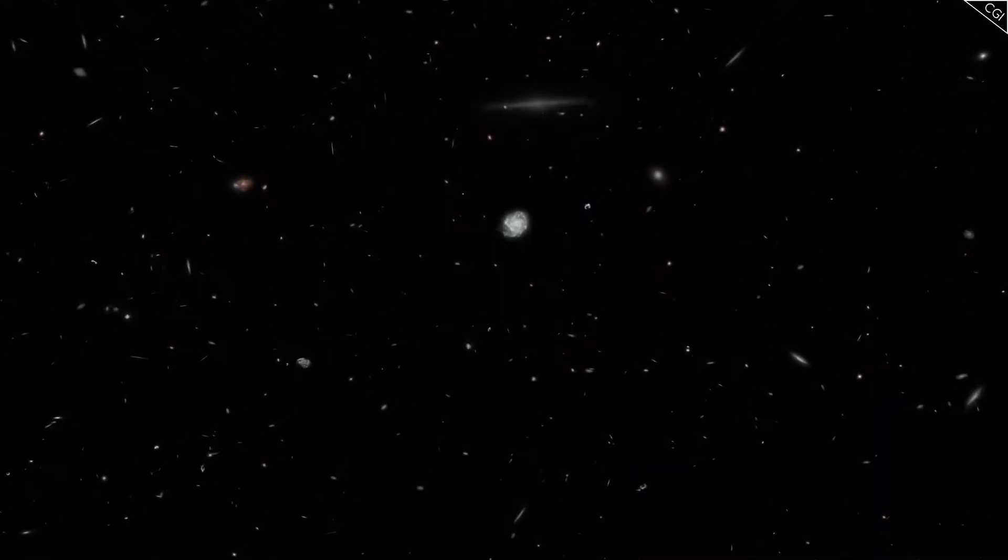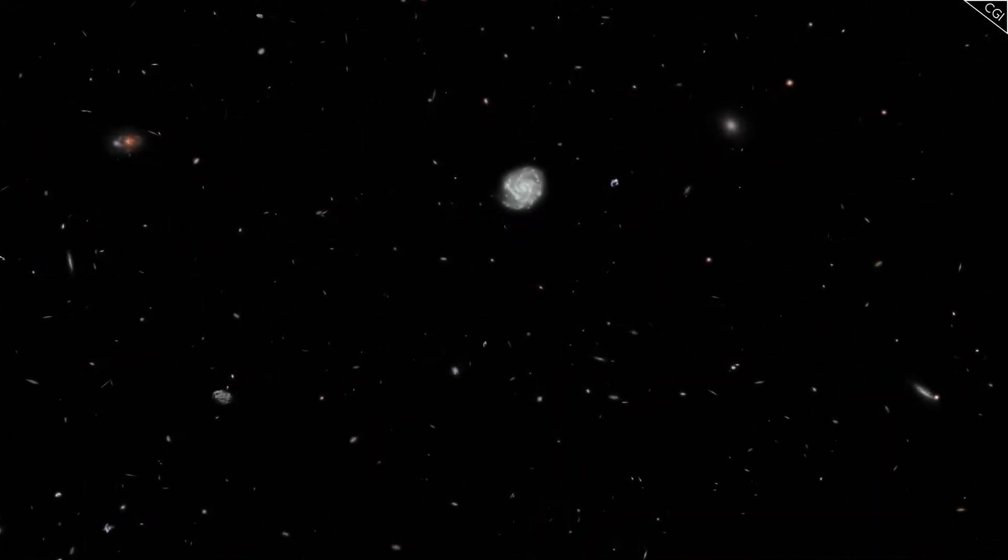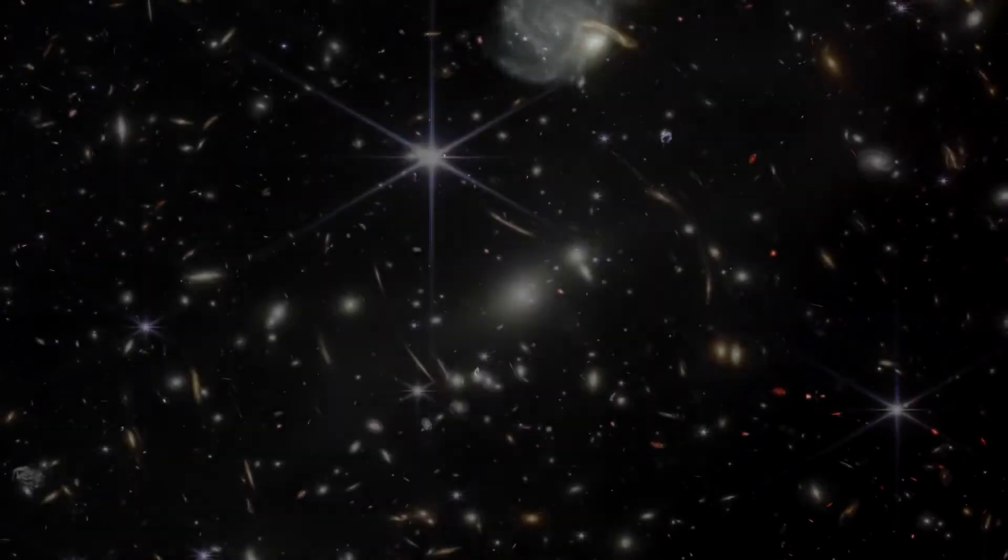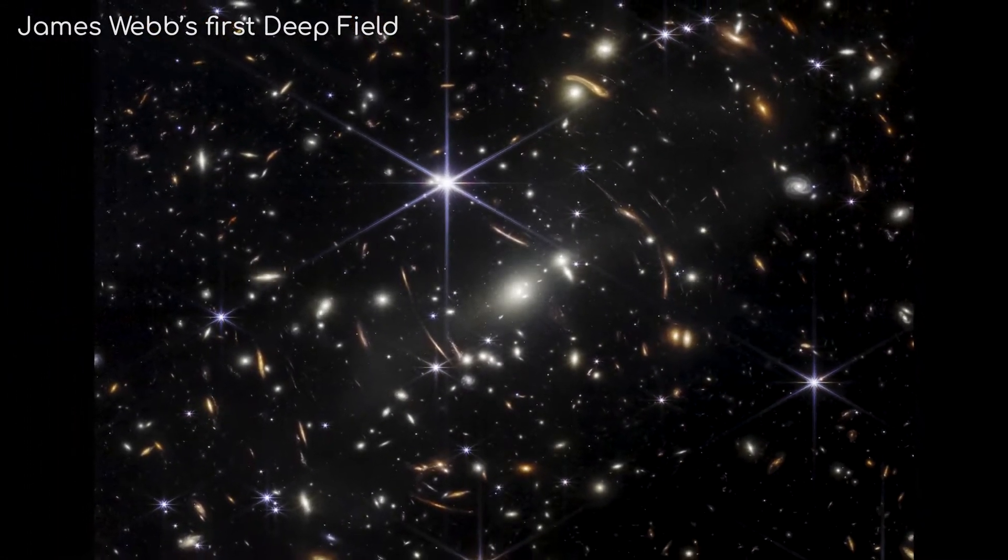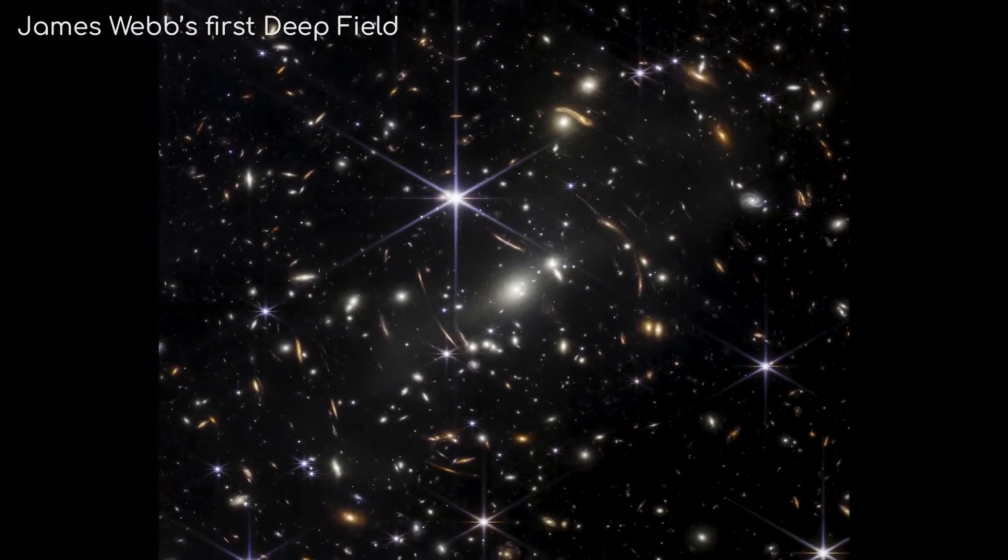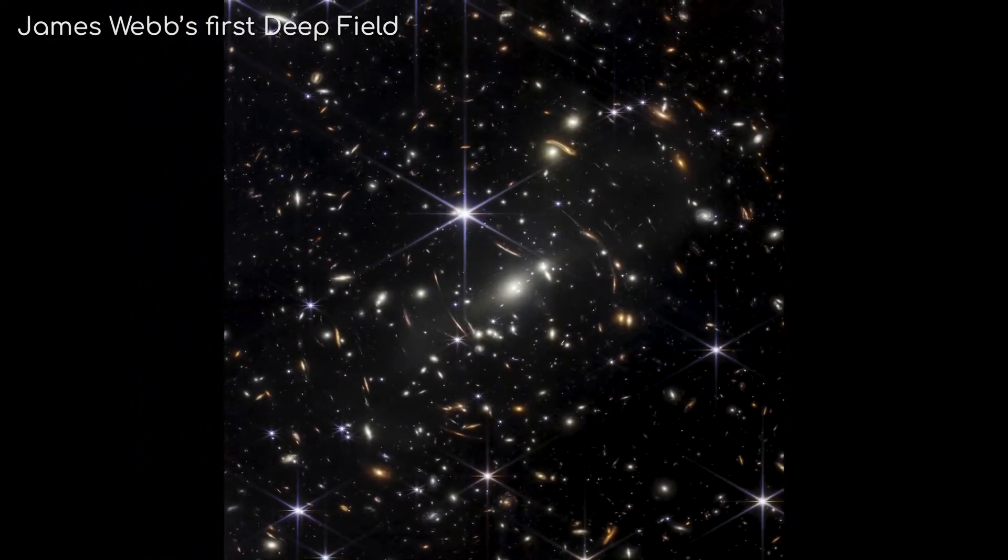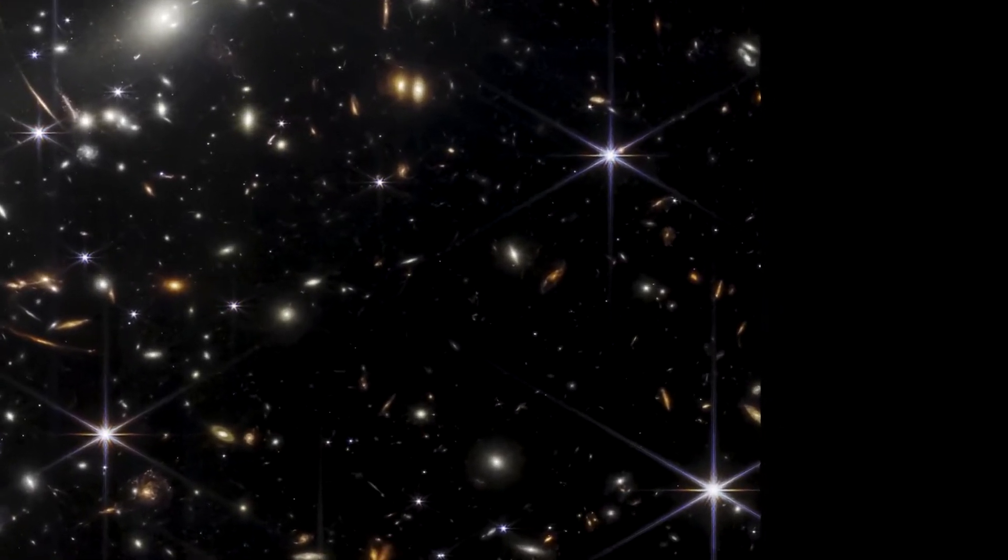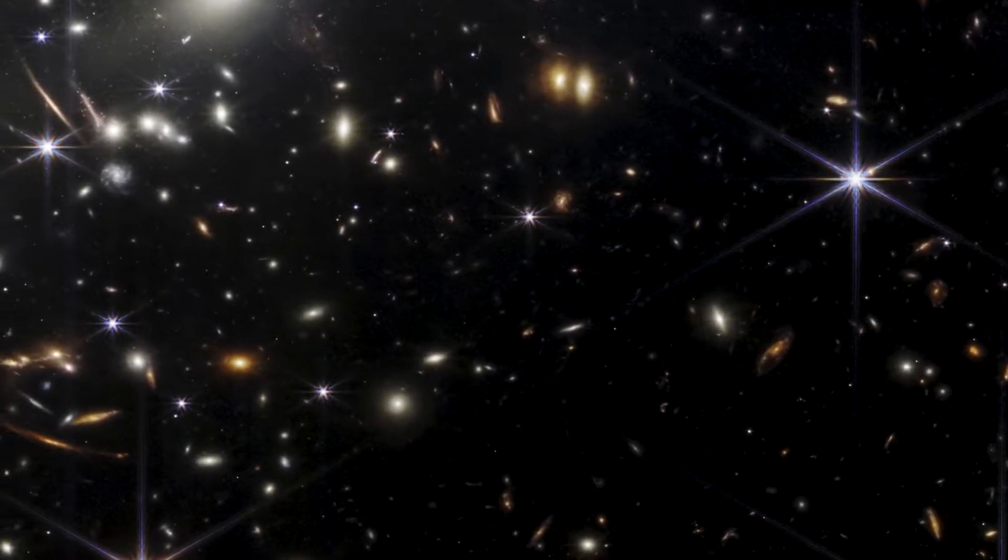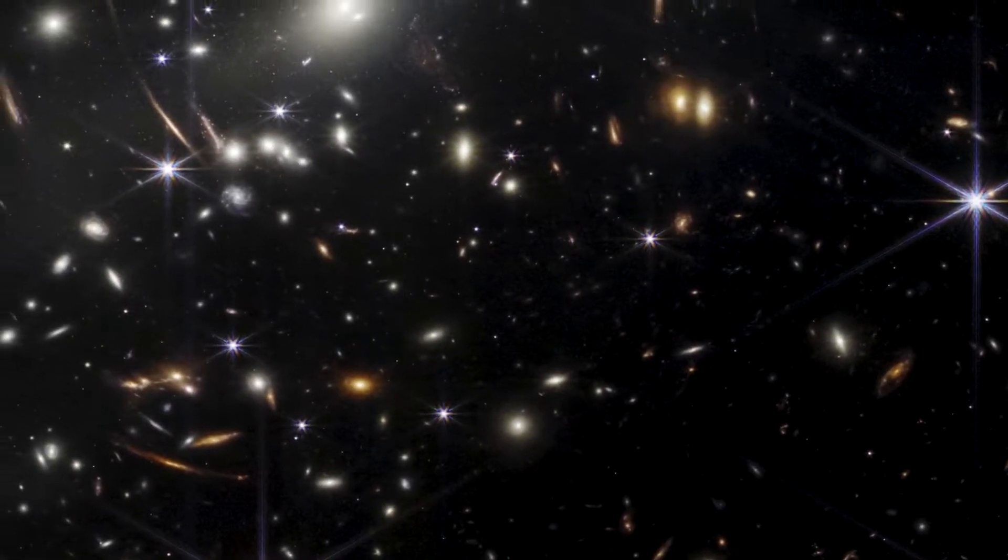Let's look further out again. Until even James Webb is straining to see, in an image known as Webb's first deep field. This image is taken from an area so small, a single grain of sand held out at arm's length would block it from your view in the night sky. At this scale, individual stars are almost completely absent. Most of what you can see here are not stars, which would be too small to detect on their own, but galaxies.